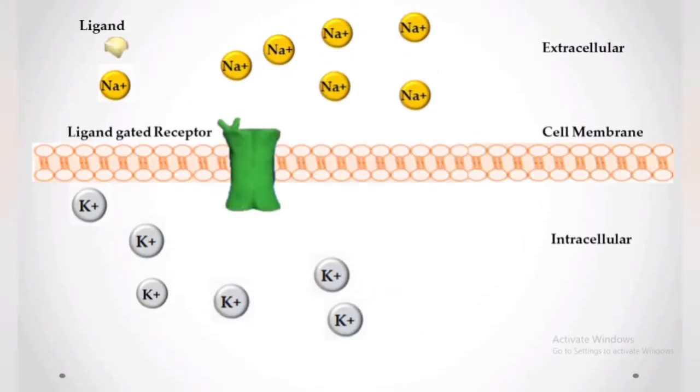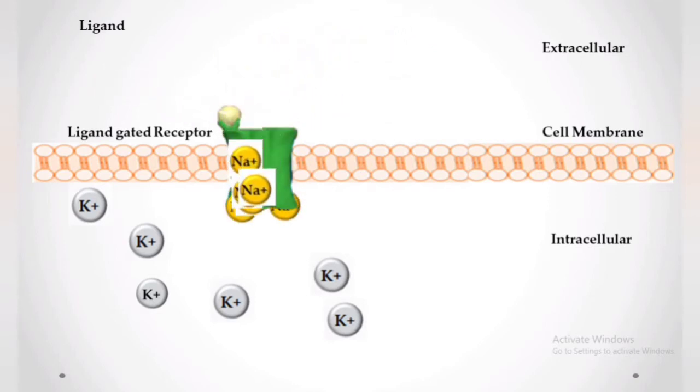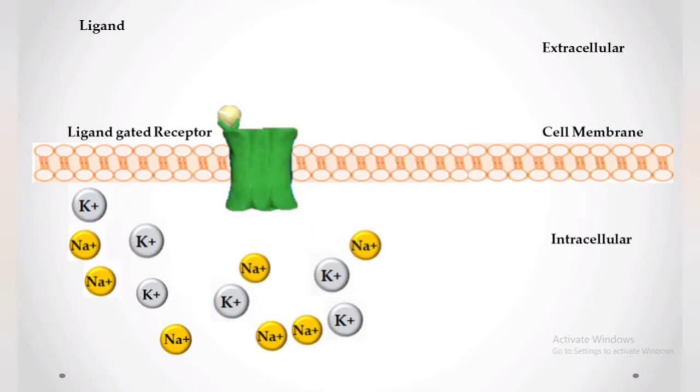In ligand-gated receptors, the cell membrane requires a specific ligand-gated channel for the movement of hydrophilic molecules through it. First, the ligand binds to the receptor, and then the receptor opens. For example, acetylcholine binds to the receptor. In this example, sodium enters the cell and an electrochemical gradient is created, resulting in depolarization.